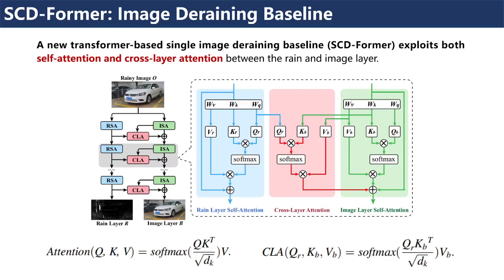We also propose a new transformer-based single-image deraining baseline, SC-deformer, which exploits both self-attention and cross-layer attention between the rain layer and image layer. By calculating the correlation degree between both layers, it provides an extra prior for enhanced feature representation.